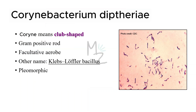The word Corynebacterium has two specific words in it. The first is 'coryne' or 'corine,' which means club-shaped — long at one end and wider at the other end. The second is 'bacterium,' meaning this is a bacterium. Corynebacterium is a gram-positive rod. It is a facultative anaerobe and is also called the Klebs-Löffler bacillus.